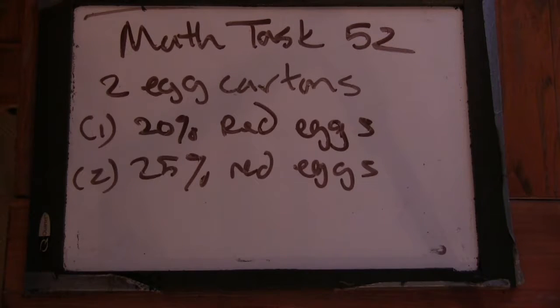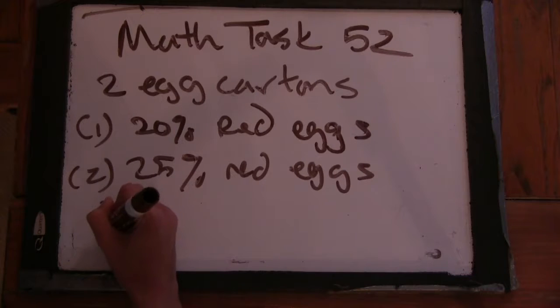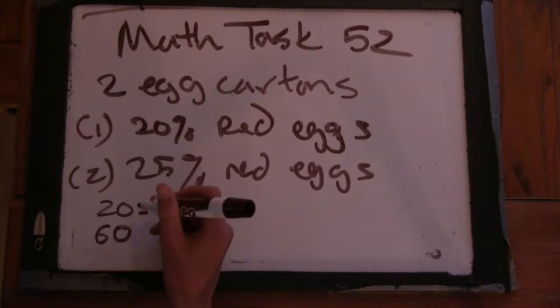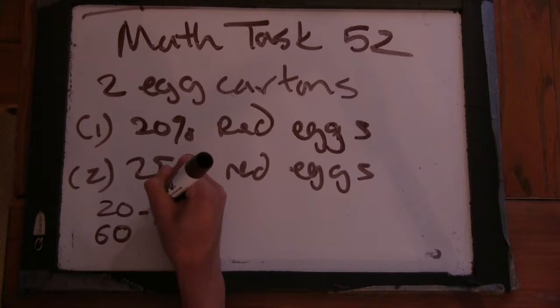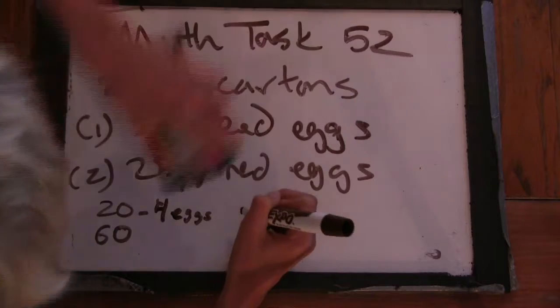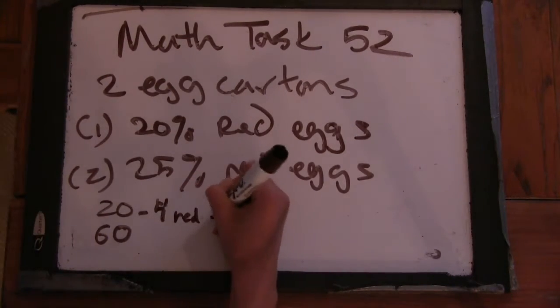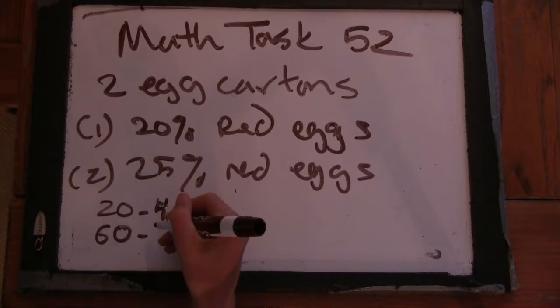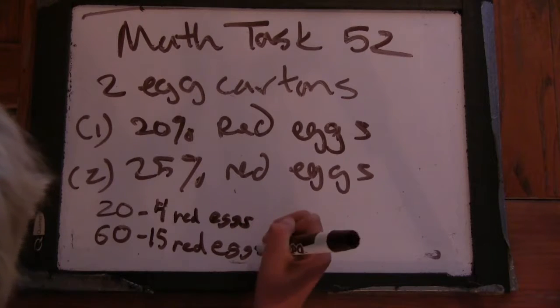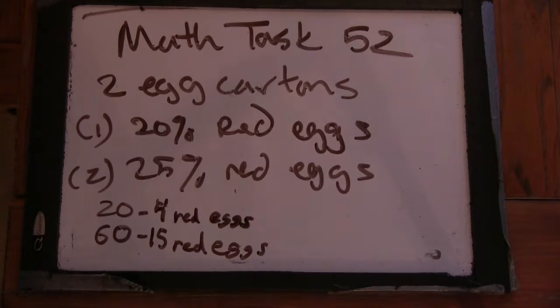So, what I did is I picked values for the number of eggs. Okay. So, I picked the first one at 20 eggs and the second one would have 60 eggs. So, we would have 20% that would be four red eggs. And then the one with 60 would have a fourth of them be red eggs. So, they would have, what, 15 red eggs. So, all right. Well, how did you calculate that there were four red eggs in the one that had 20?